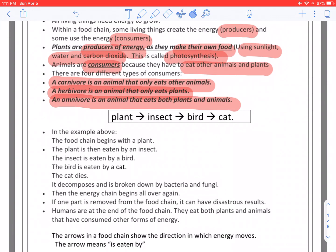If you look at this example above, the food chain begins with a plant. The plant is then eaten by an insect. The insect is then eaten by a bird. The bird is then eaten by a cat, and the cat dies. It decomposes and is broken down by bacteria and fungi.